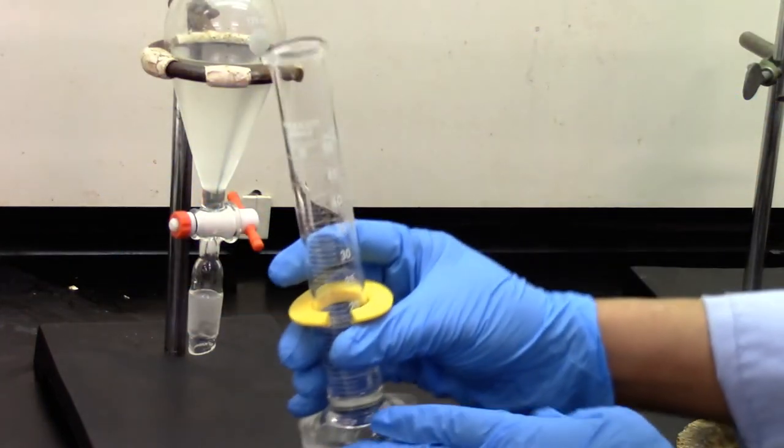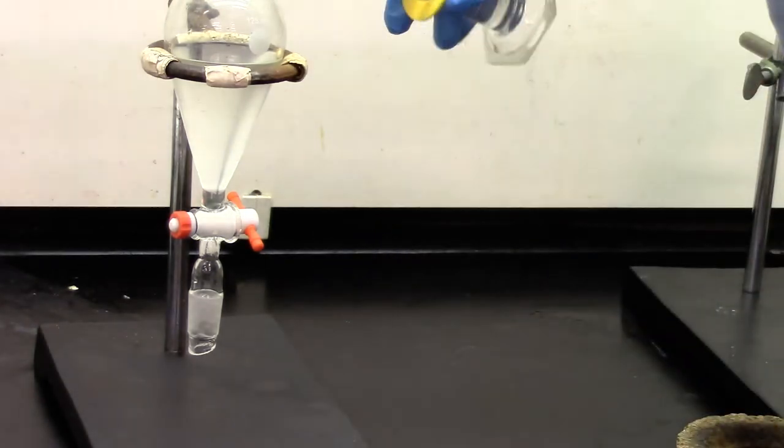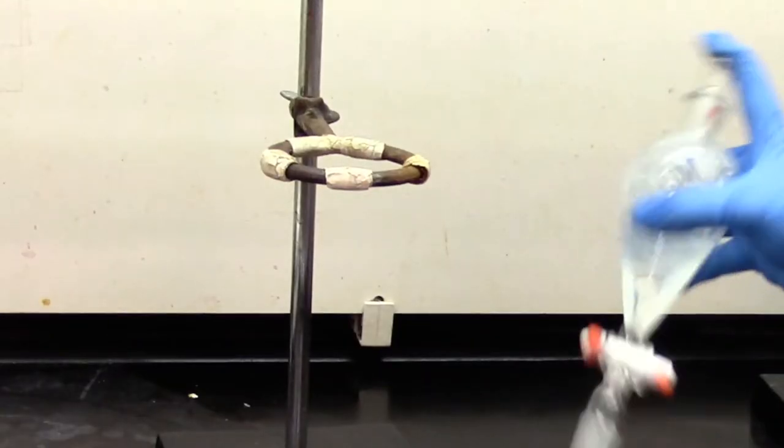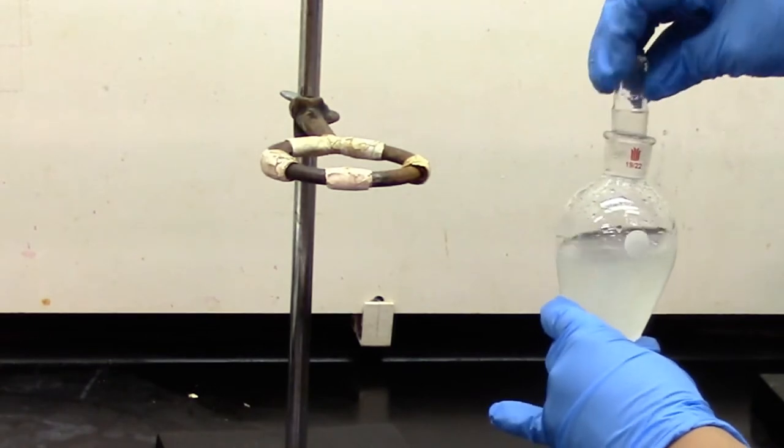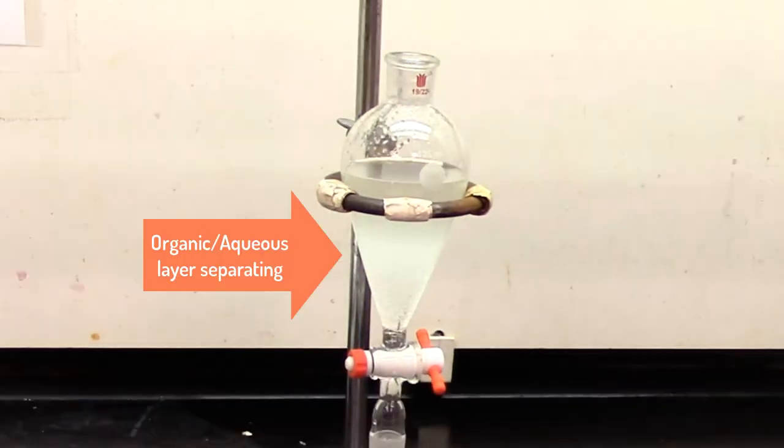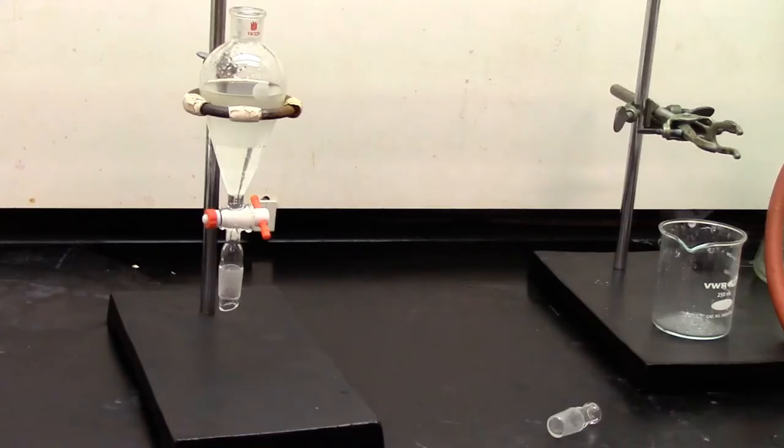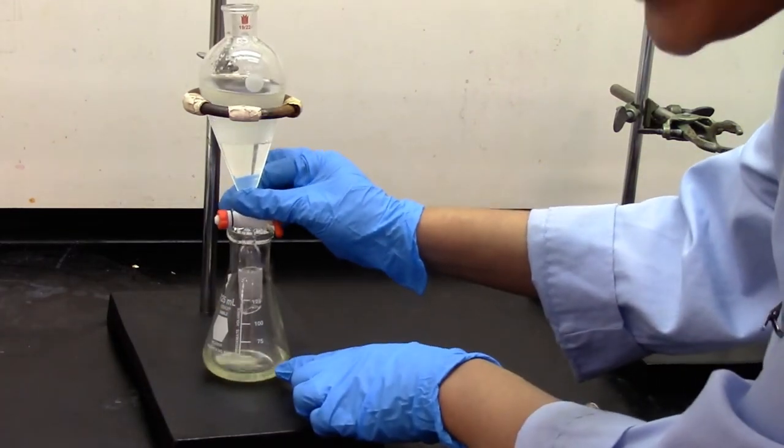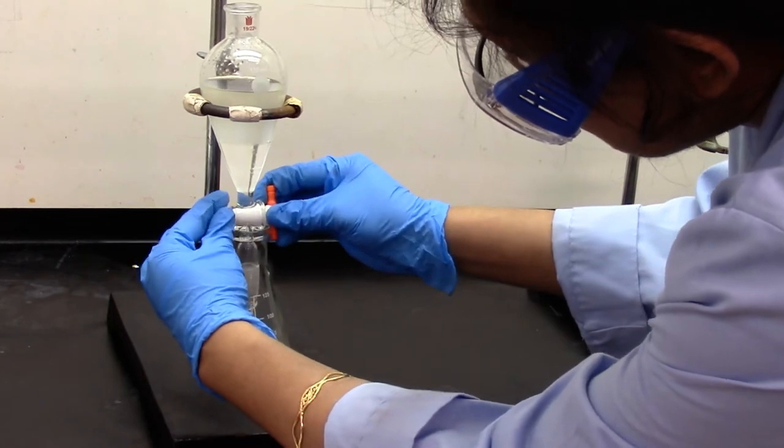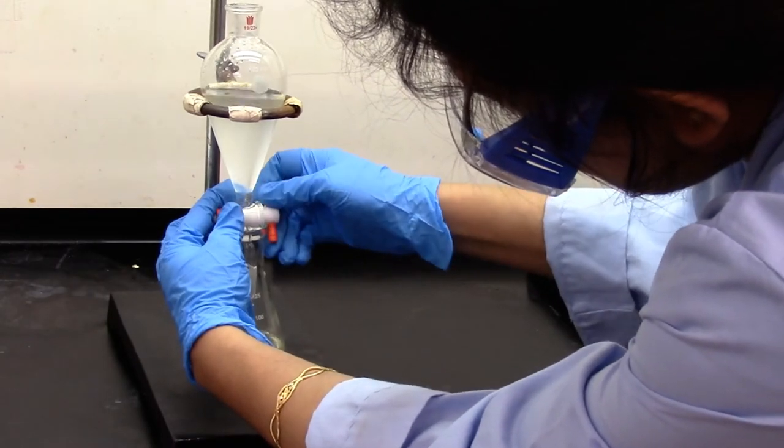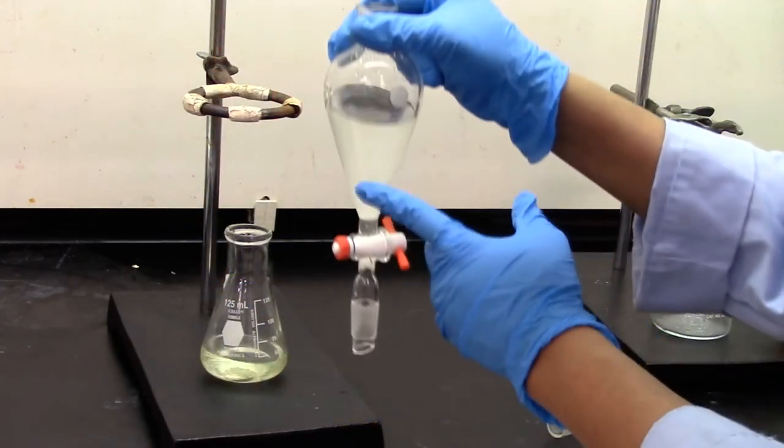To the top layer, we're going to add 15 mL of dichloromethane. Mix, and then uncap and let it separate into two layers. Again, we see two layers. I'm going to transfer the bottom layer into the same Erlenmeyer flask where I had my first extract. The top layer is a discard.